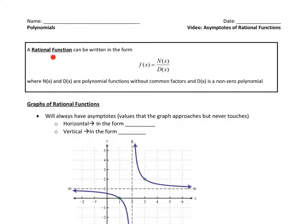A rational function can be written in the form f of x equals some polynomial n of x over another polynomial d of x, where there aren't any common factors and where d of x is non-zero, because if d of x were zero, then this would be undefined.